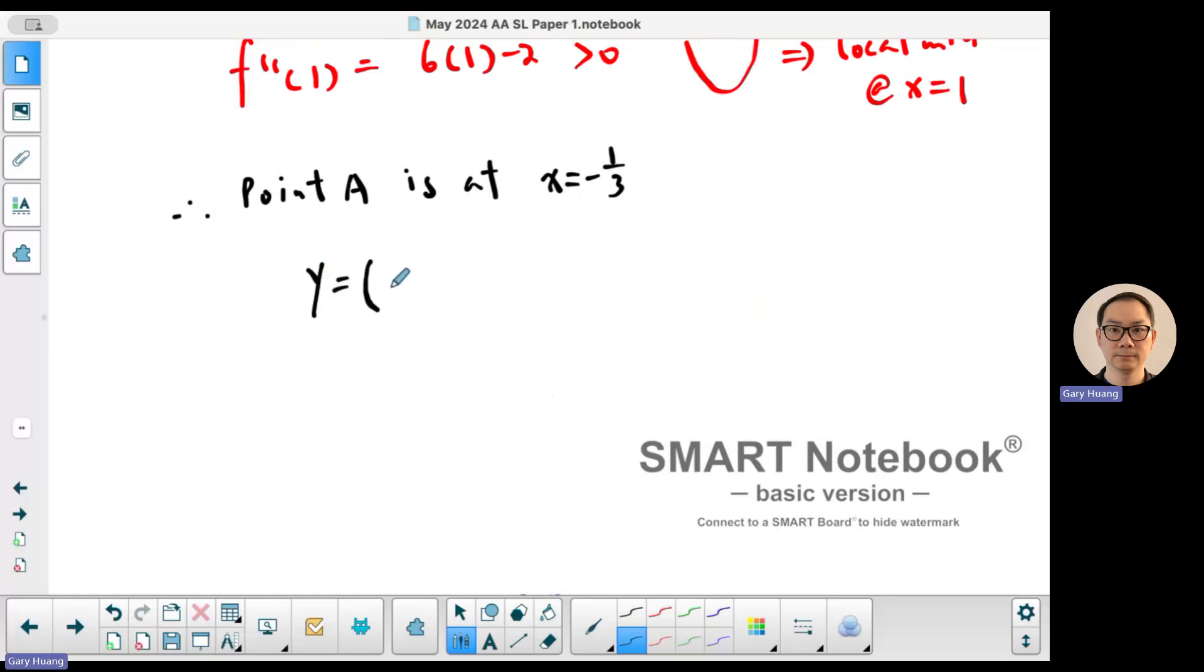So y is equal to (-1/3)³ minus x², so (-1/3)² minus x, so -1/3 plus y. So sub it in. This is -1/27, this is 1/9, this is +1/3, this is +1.